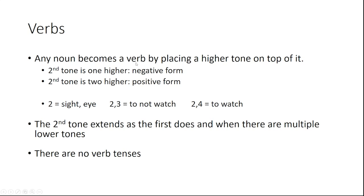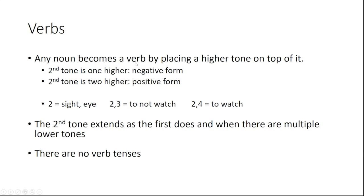Any noun becomes a verb by placing a higher tone on top of it. If the higher tone is one higher, it's a negative form; if it's two higher, it's positive. So 2 means sight, eye, vision. If you play that at the same time as the third tone, it's 'to not watch'—a negative verb. If you do two higher from 2, it's positive, so it's 'to watch.' The tone extends as the first does, and there are no verb tenses.